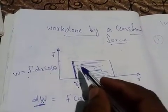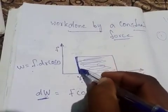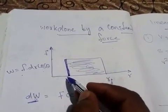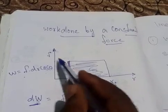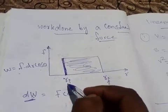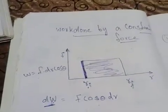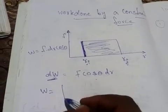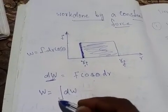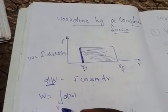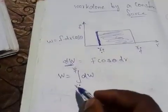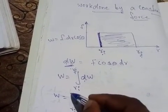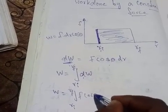Now we have to find out the total work done because of this force, and the displacement produced from initial position Ri to final position Rf. To find out the total work done, we have to integrate this equation dW with limit Ri to Rf. Since dW = F cosθ dR, we can write W = ∫(Ri to Rf) F cosθ dR.